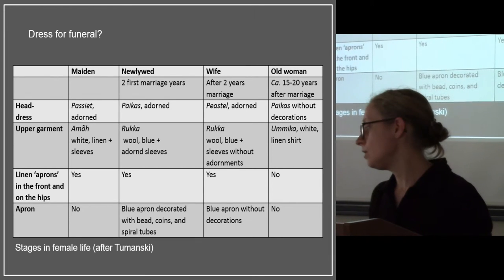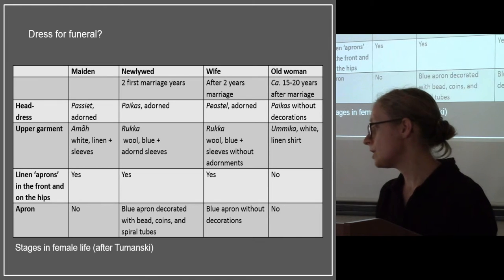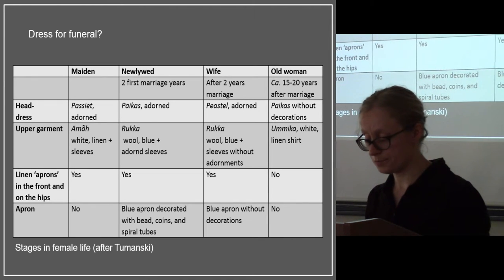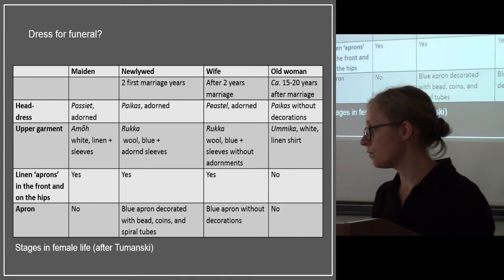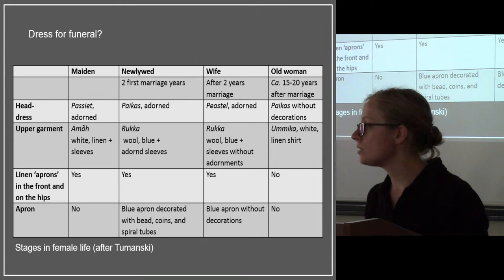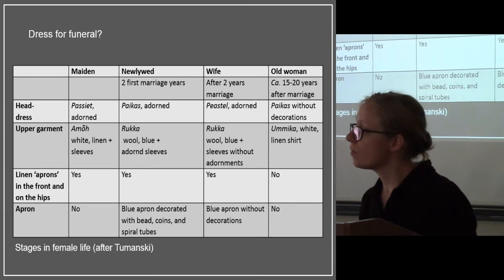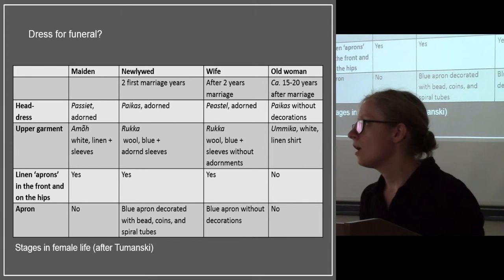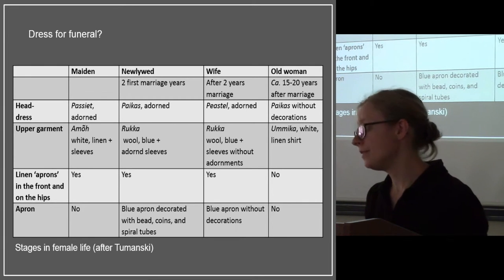The transitions were marked especially by the hair dress, but also by the ornaments. The first pieces of jewelry a girl acquired while she was a maiden, and for example she also received a leather belt with studs at that time.